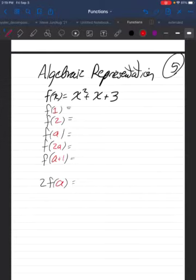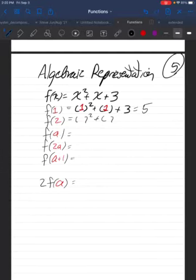Remember, f of 1 is expressed by plugging 1 in for x wherever you see x. There's a really helpful way to do this in complicated formulas, which is just to replace every x by a pair of parentheses and then put the number inside the parentheses. So, 1 squared plus 1 plus 3 is 1 plus 1 plus 3, which is 5. 2 squared plus 2 plus 3 is 4 plus 2 plus 3, which is 9.